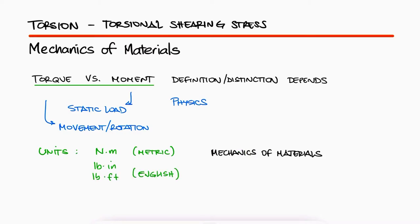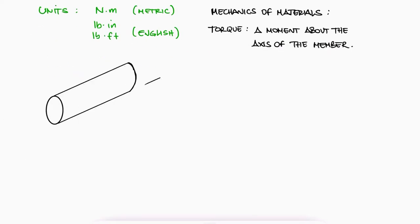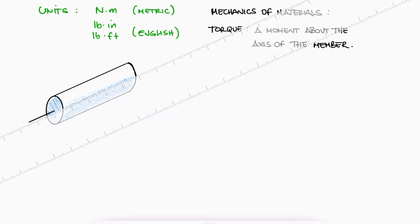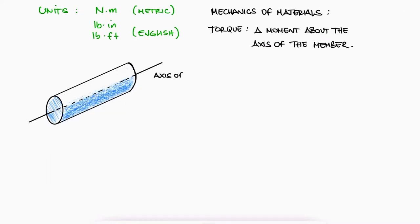For a Mechanics of Materials course, the difference lies in that the torques are affecting what you would define as the axis of the member you're analyzing. For a circular cross-section beam, cylinder, or rod, we would of course define their axis as the line resulting from all the points that are equidistant from its surface.